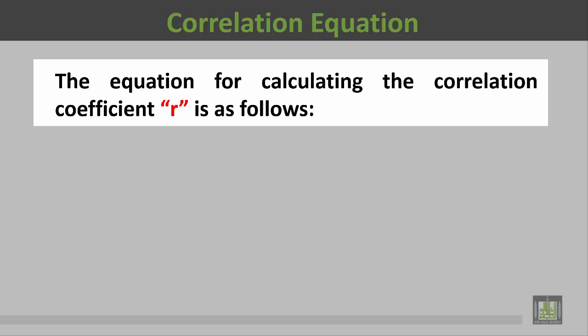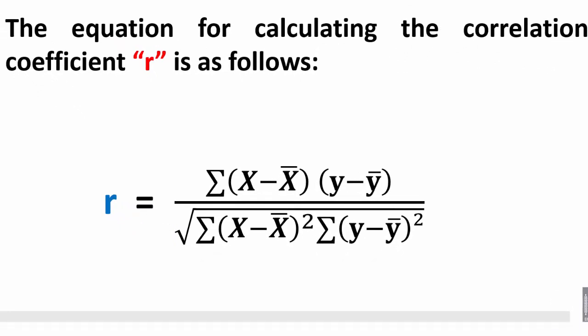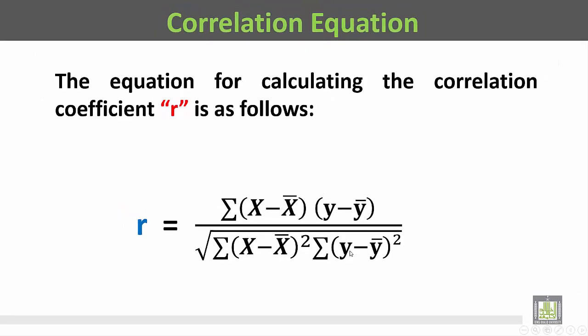R equals sigma (x minus x bar) times (y minus y bar) divided by the square root of sigma (x minus x bar) squared times sigma (y minus y bar) squared.